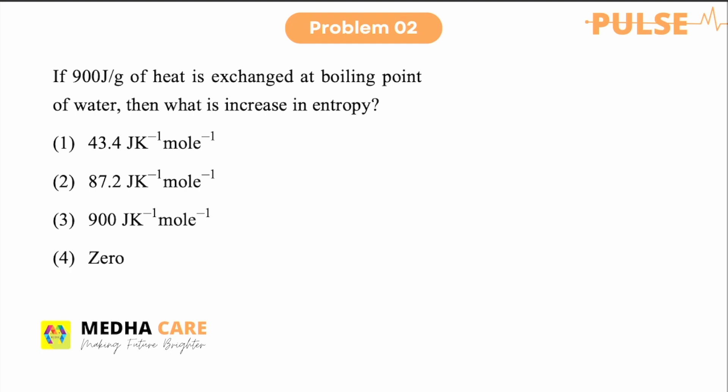So see carefully the options here given per mole. But the energy released is given per gram. So first we have to convert this to per mole. So delta H in this case will be 900 into 18 Joule per mole. As you know, the molar mass of water is 18 gram.